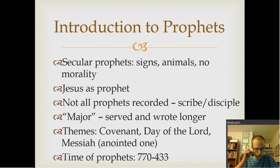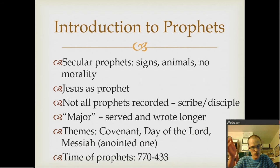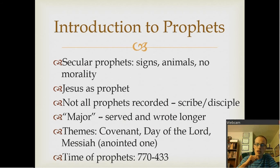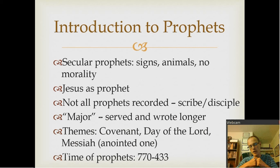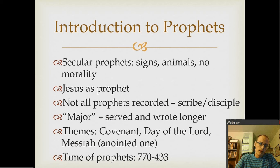Not all prophets were recorded — Elijah and Elisha, mentioned in Kings, don't have their own books, nor are all their prophecies recorded. But the ones God wanted recorded are recorded. Prophets often didn't write it themselves; they had scribes or disciples who would write or copy for them. 'Major' and 'minor' prophets basically means major prophets served longer and wrote longer books — it's a generalization, since some minor prophets are as long as major ones. Key themes throughout the prophets include the covenant between God and Israel, the day of the Lord, and the Messiah — 'Messiah' is the Hebrew word, 'Christ' is the Greek word, both meaning 'anointed one.'